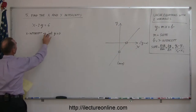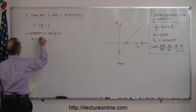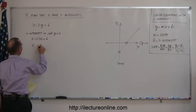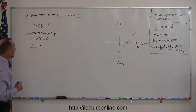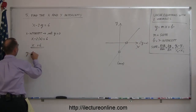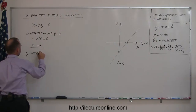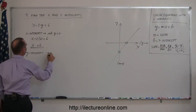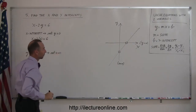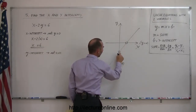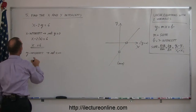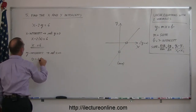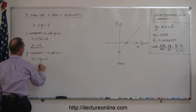How about x minus 2y equals 6? We can simply say: I'm going to find the x-intercept, which means I'm going to set y equal to zero. Remember, wherever we cross the x-axis, the y-value is zero at that point. So, setting y equal to zero, I get x minus 2 times zero equals 6, or x equals 6. There's the x-intercept.